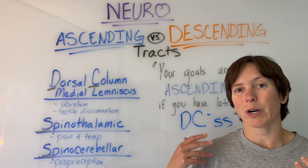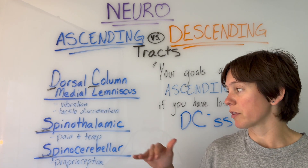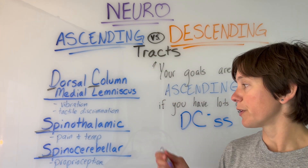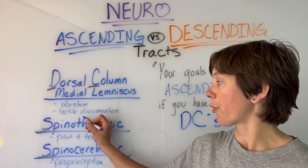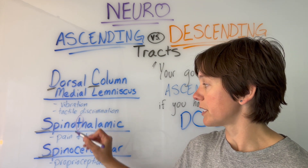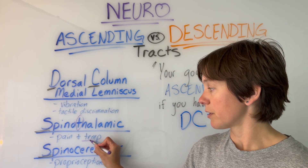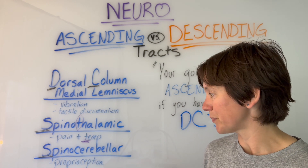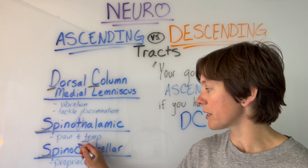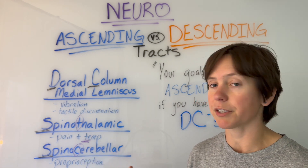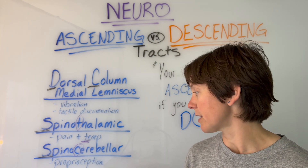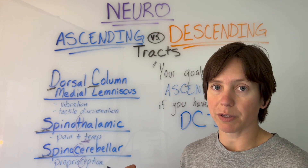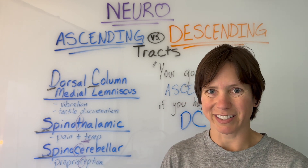To help you remember between the different tracts: spinothalamic with a T is for temperature, which also has a T. And spinocerebellar with a C helps with proprioception, which also has a C.